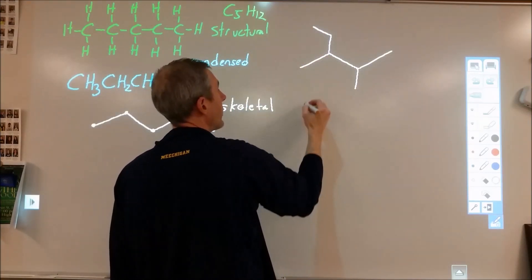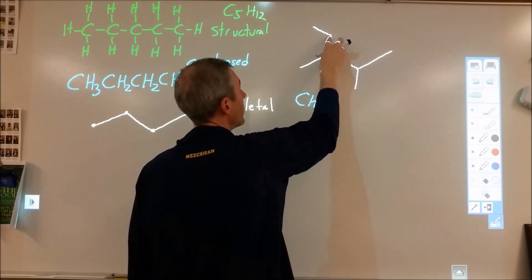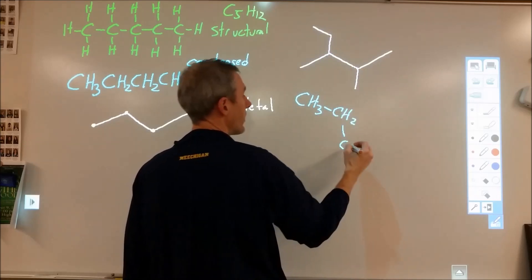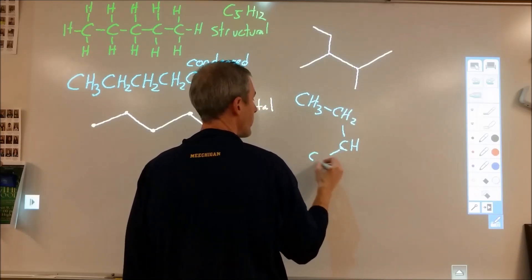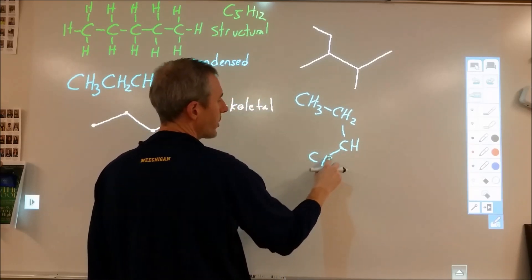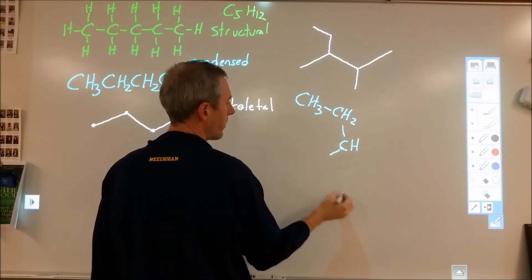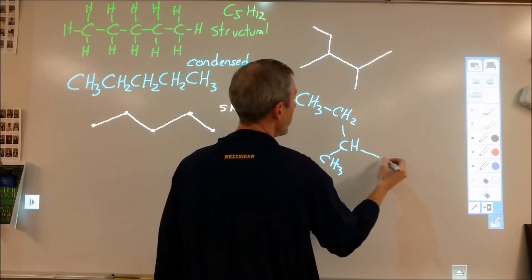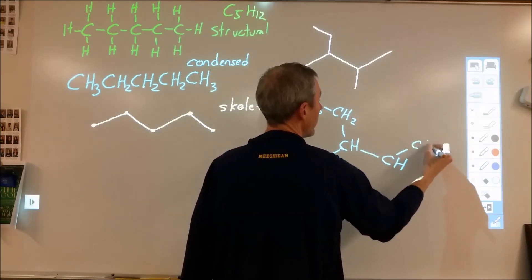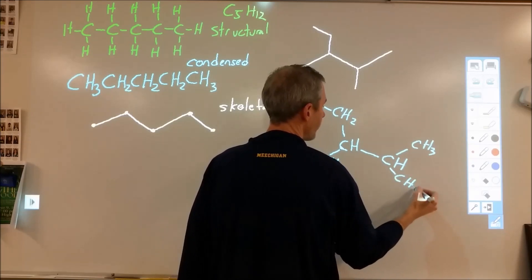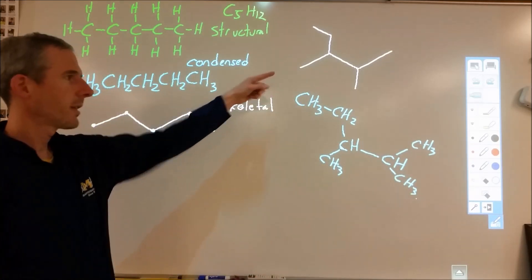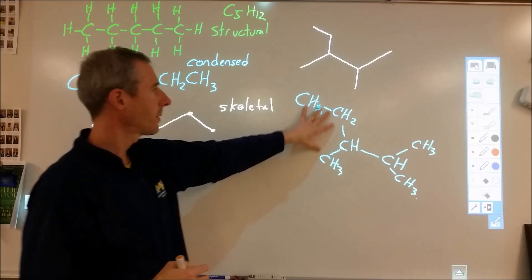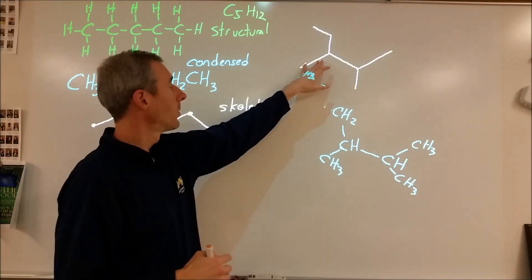For the condensed structure, starting here I have a CH3 into a CH2 into a carbon. This carbon has three different carbons attached, so it's a CH. We have a CH3 coming out at that branch, and continuing we have CH, CH3, and CH3. Doing these conversions at the beginning is really valuable — take some time to process and understand the relationships between these different representations.